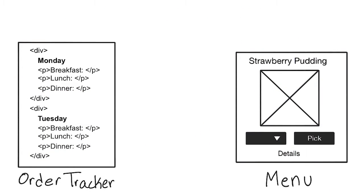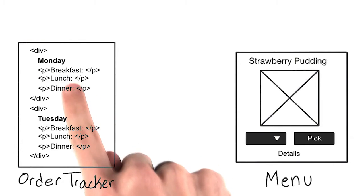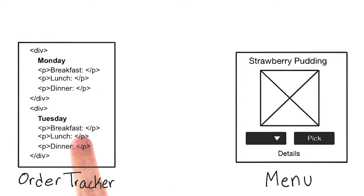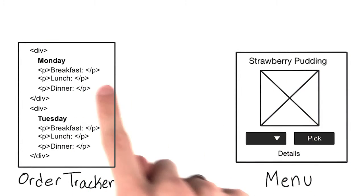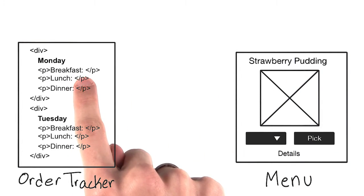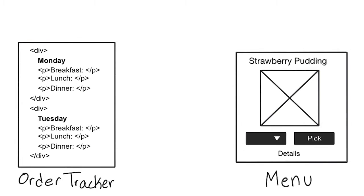When we create the order tracker component, we'll have HTML that will display the selected menu item for a meal. But how does Ember keep track of this information? We need some data structure that will keep the two of these in sync.